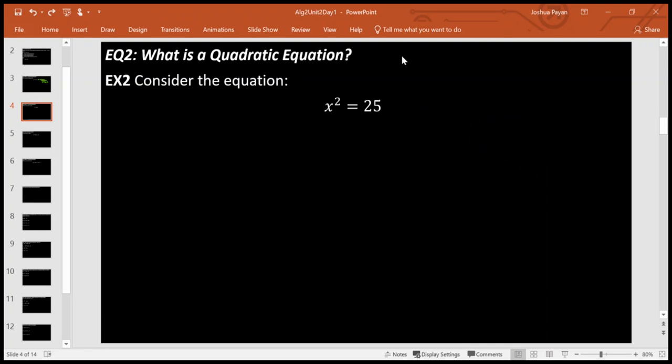Okay, so a quadratic equation. That's where you have a quadratic expression set equal to something. Really, it's just an equation involving a quadratic expression, and again, involving a degree two polynomial. In this case, this is a monomial, but still technically, it's still a quadratic expression set equal to something else.